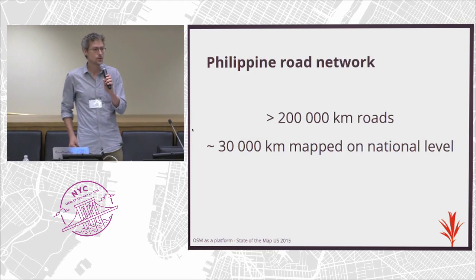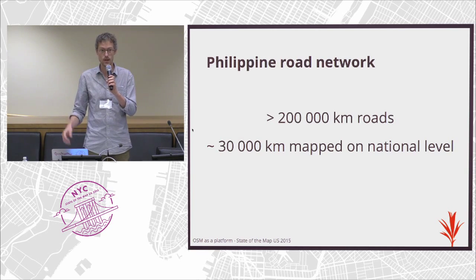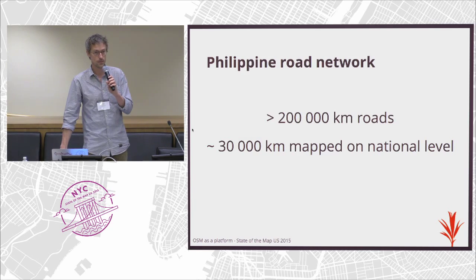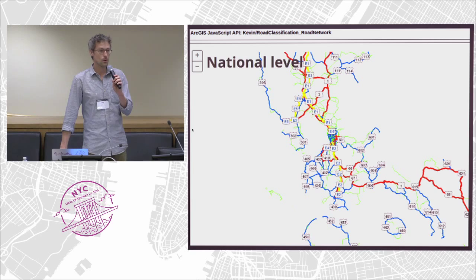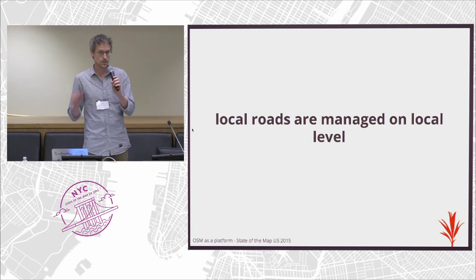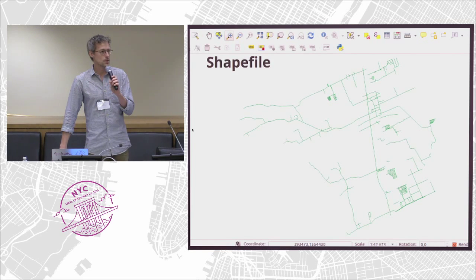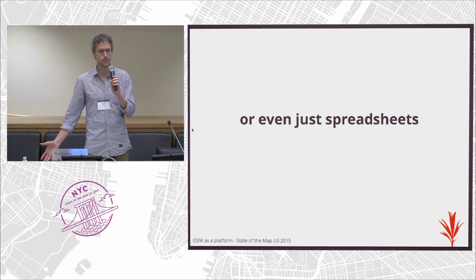The Philippines has well over 200,000 kilometers of roads. Roughly 30,000 kilometers are managed on a national level, and data about these roads is well managed — it's available for download on ArcGIS Online with a good schema. Except that all the other roads, the local roads managed at a municipal or barangay level, are not that well managed. Every municipality or barangay might manage their data in different formats like shapefile or KML, some in AutoCAD, and some even manage road network data in spreadsheets or tables in Word documents.